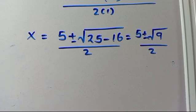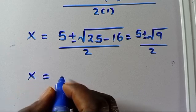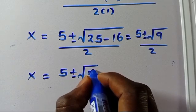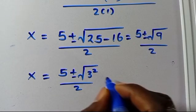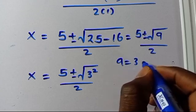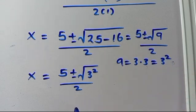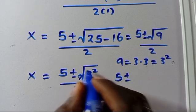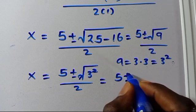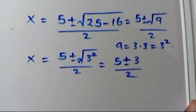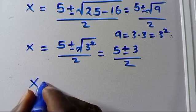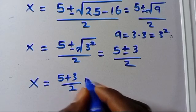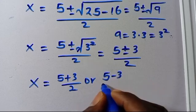So from here we have x equals 5 plus or minus 3, over 2. This gives us either x equals 5 plus 3 over 2, or x equals 5 minus 3 over 2.